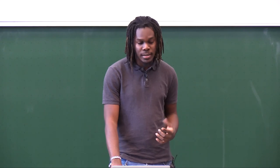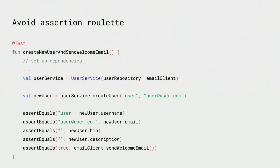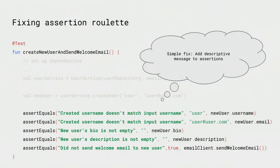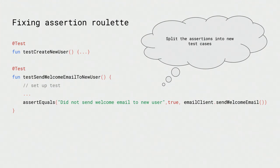Another tip is to avoid assertion roulette. Assertion roulette means asserting so many things in one test that when it fails, you're unsure why — was it the username, the bio, or the welcome email? To fix this, you can add messages to your failures, or simply separate the tests. If you find yourself verifying more than two or three unrelated things, you might be doing assertion roulette. Split the tests into as many tests as needed.